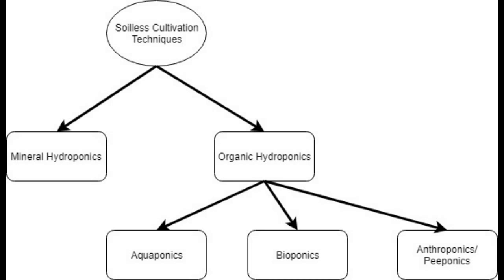On one end, you can have very precise scientific production that really maximizes output, and you can very easily calculate and automate all the steps. On the other hand, you have more complex systems — sometimes involving ecosystems, as in the case of aquaponics — and sometimes involving very complex biological reactions, as is the case with bioponics and anthroponics.